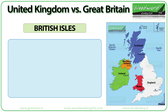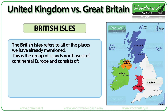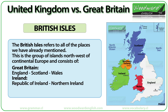What are the British Isles? The British Isles refers to all of the places we have already mentioned. This is the group of islands northwest of continental Europe and consists of Great Britain — England, Scotland and Wales — Ireland, the Republic of Ireland and Northern Ireland, as well as the Crown Dependencies: Isle of Man, Guernsey and Jersey.